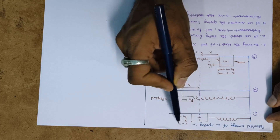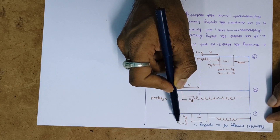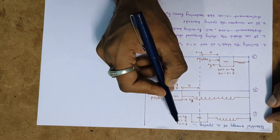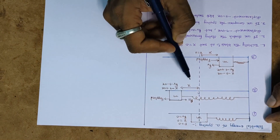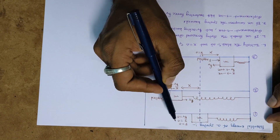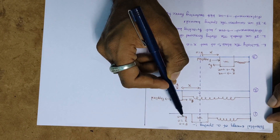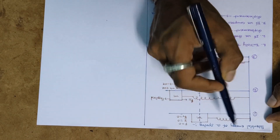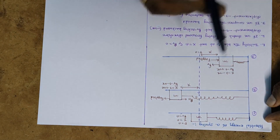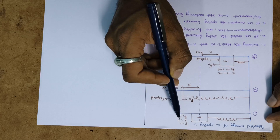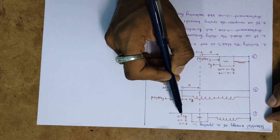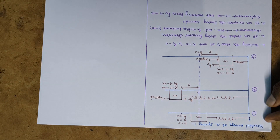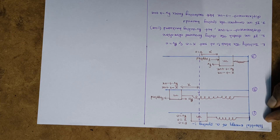Initially, the object is at rest, meaning the external force is equal to zero. Whenever the external force is zero, the displacement is also zero, and there is no restoring force developed in the spring. So F equals zero, x equals zero, and restoring force also equals zero.